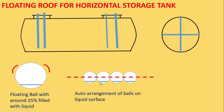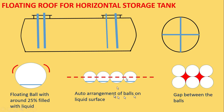Now somebody may say that because the balls are spherical, there may still be some area exposing the PMS or gasoline to air. Yes, it will. If you look at the red section, that is the exposed PMS. But if you have 2 or 3 layers of balls, this area can be reduced drastically. Even so, that exposed red area will be only up to 5 to 10% of the total surface area of the tank, which is not going to have a major impact.